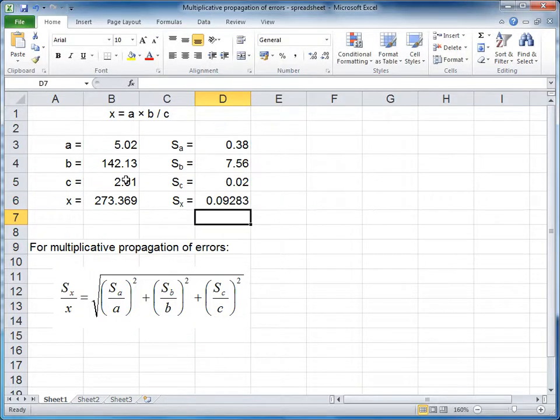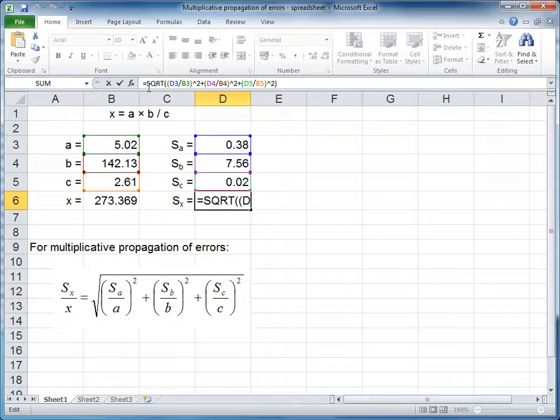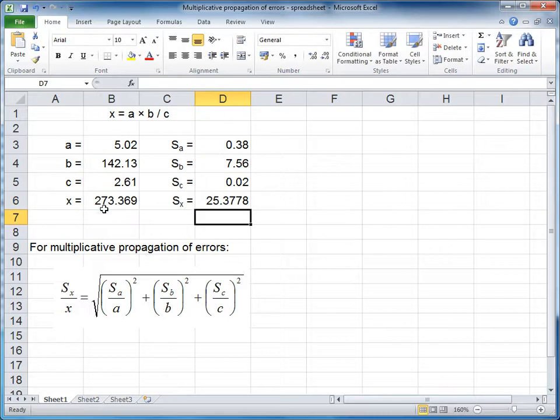If we press enter, this isn't the end of the story. We also need to multiply this value by the value of X. So we select the value of X, times, now we press enter, and this is the error of X for the multiplicative combination of values.